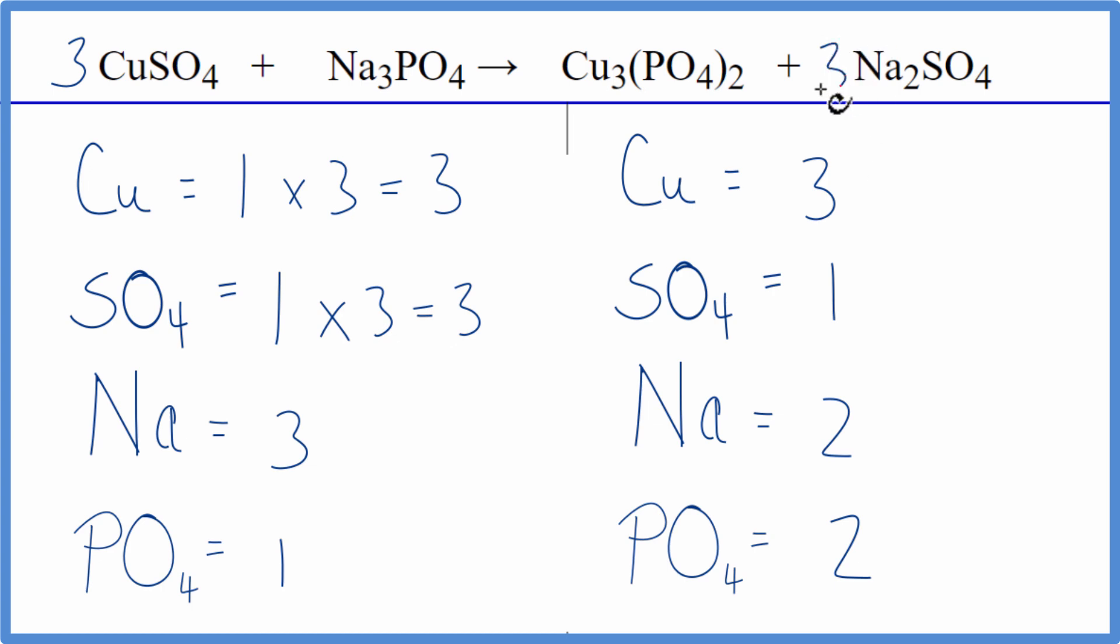Let's put a three in front of the sodium sulfate, and we can balance those. We have our one sulfate times three. Gives us three of those. They're balanced. Sodium two times three. Now we have six sodium atoms.